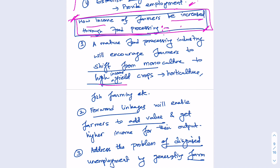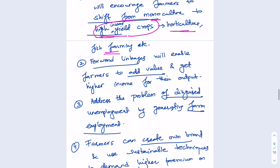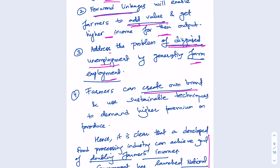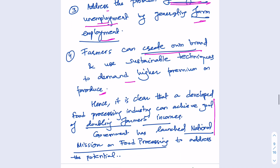A mature food processing industry will encourage farmers to shift from monoculture to high-income yield crops such as horticulture and fish farming. Forward linkages with established food processing will enable farmers to add value and get higher income for their output. Food processing can address disguised employment in agriculture by generating farm employment. Farmers can also create their own brands and use sustainable techniques to demand higher premiums on produce — small brands that carry higher market value.